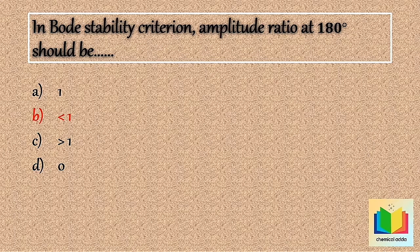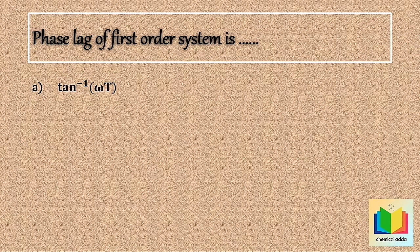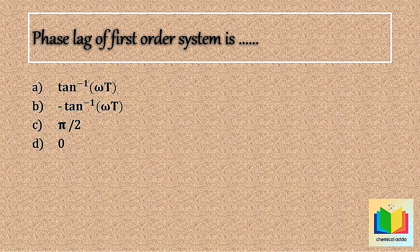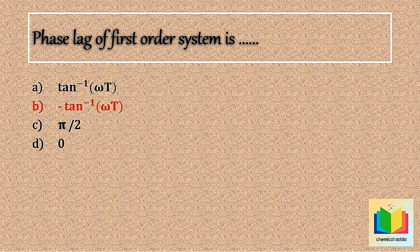Now next question — phase lag of a first order system is: Option A) tan inverse of omega·t, Option B) minus tan inverse of omega·t, Option C) pi by 2, Option D) 0. Your time starts now. 10, 9, 8, 7, 6, 5, 4, 3, 2, 1. Stop. Answer is option B: minus tan inverse of omega·t.